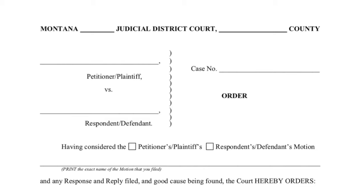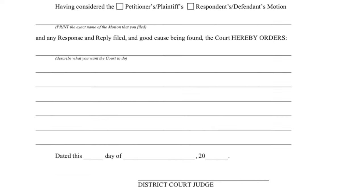The proposed order is the document that you are asking the judge to sign. It tells anyone who reads it exactly what the judge has ordered in very simple, clear terms. It should be short and to the point. Basically, you act like the judge's secretary — you draft an order for the judge to sign so that the judge does not need to write one. However, the judge may not like the order that you have written and as a result, the judge may change your order or sign a different order altogether.